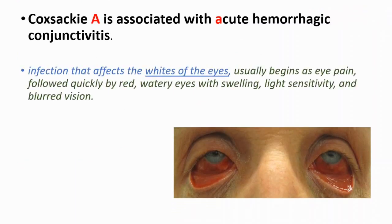Another condition is acute hemorrhagic conjunctivitis. This type of infection affects the whites of the eyes. It usually begins as eye pain, followed by red watery eyes with swelling, light sensitivity, and blurred vision.